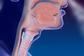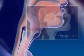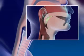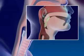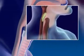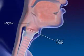Air continues on to the larynx. The epiglottis, a flap of tissue in front of the larynx, closes off the larynx when swallowing to prevent food from entering. The larynx, or voice box, contains the vocal folds.